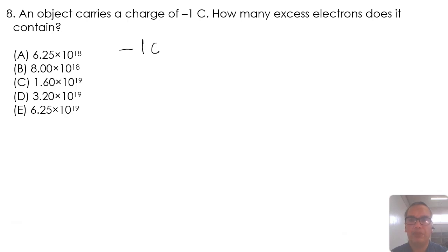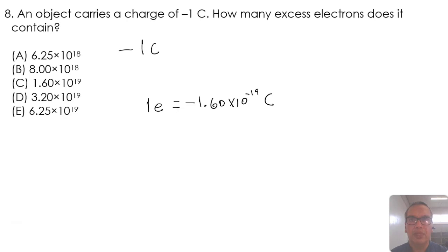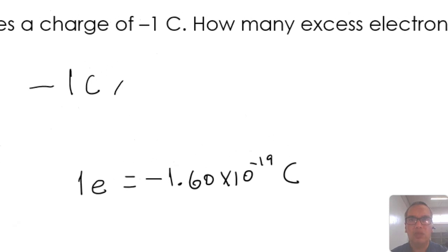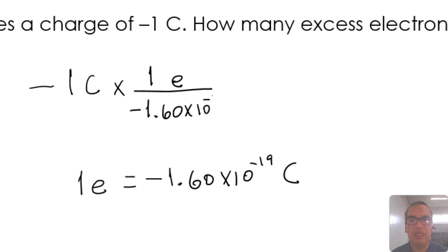You must commit to memory that one elementary charge, which is the charge of a single electron, is negative 1.60 times 10 to the negative 19 Coulombs. A simple conversion will then tell you that negative 1 Coulomb can be multiplied by the conversion factor of 1 electron per negative 1.60 times 10 to the negative 19 Coulombs, which results in 6.25 times 10 to the 18th electrons.